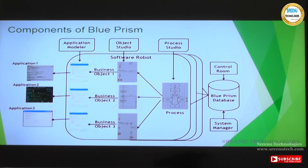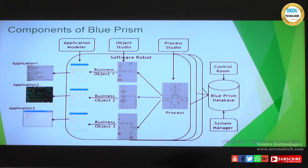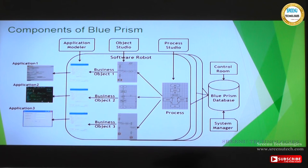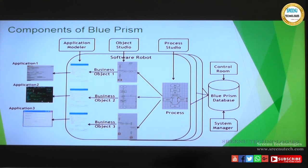The application modeler sits between the applications and the object, acting as the interface. It stores all the attributes of the application, allowing the business object to interact with it. For example, in a web browser, HTML has attributes like buttons, input boxes, text areas, headers, drop-downs — all these details are stored in the application modeler. When the object needs to read, write, or perform operations on the application, it connects to the application through this application modeler.